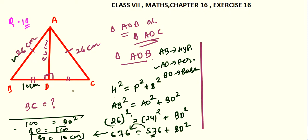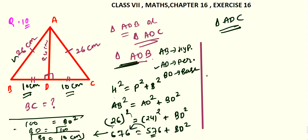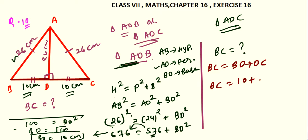So if BD is 10 centimeters, then DC is also 10 centimeters because it is given in the question BD and DC are equal. BC is the total line segment and BC equals BD plus DC. So BC equals 10 plus 10, which gives BC equals 20 centimeters. This is your required answer.